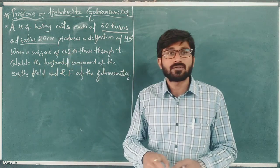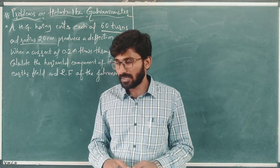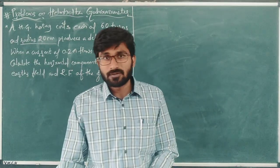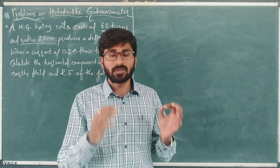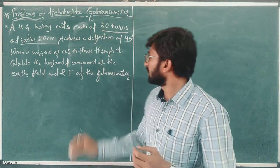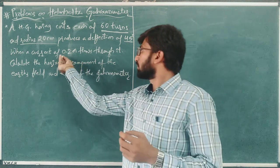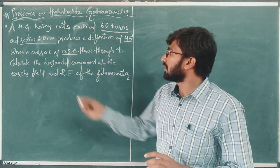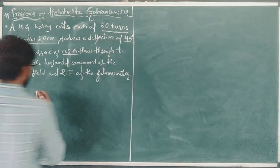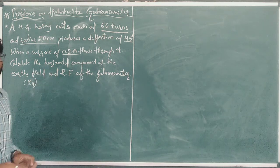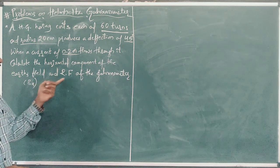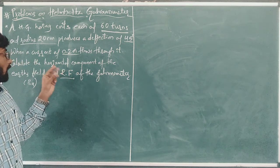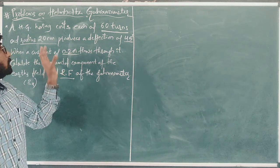When a current of 0.2 ampere flows through it, we need to find two things: first, the horizontal component of the Earth's magnetic field, which is BH, and second, the reduction factor K of the galvanometer.